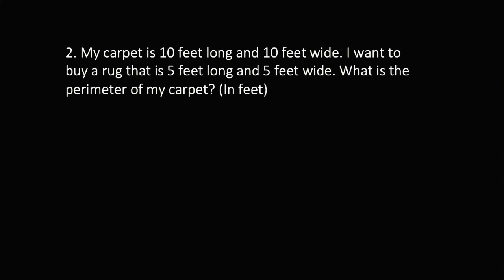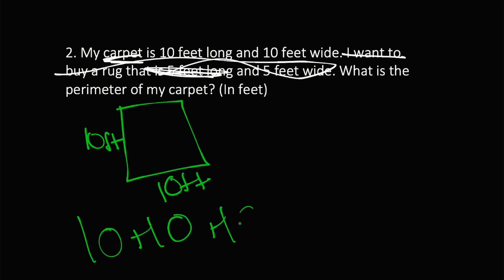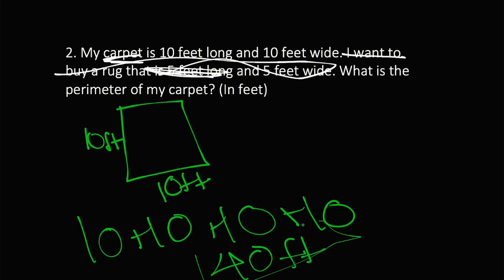My carpet is 10 feet long and 10 feet wide. I want to buy a rug that's 5 feet long and 5 feet wide — what is the perimeter of my carpet? This word problem throws you off by including something completely unrelated about buying a rug, so we can just cross that out. We're talking about the carpet, which is like a square because it's 10 feet long and 10 feet wide. So we do 10 plus 10 plus 10 plus 10, which gives us 40 feet as our perimeter.